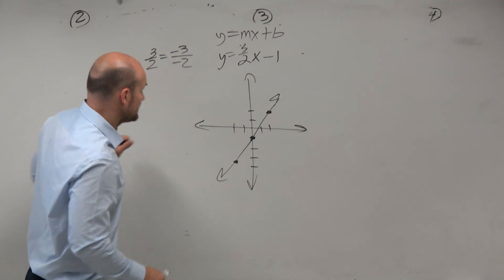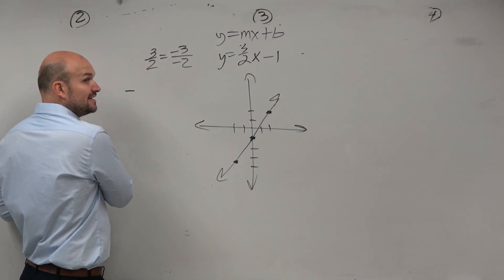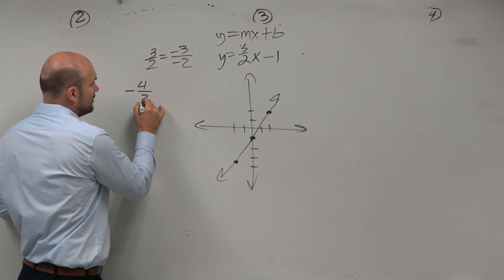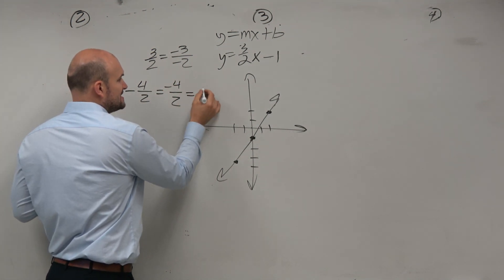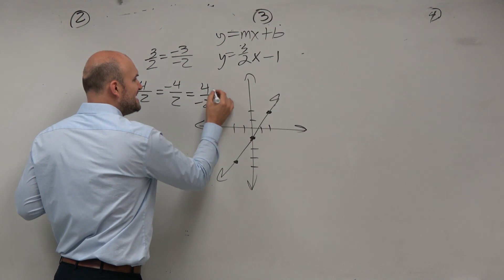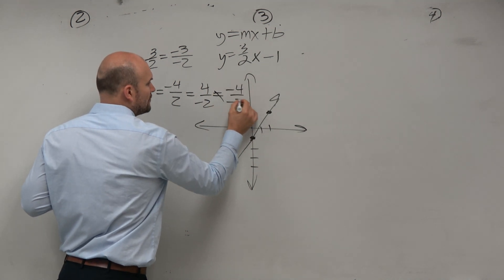And since we're on this topic, it's important then, what if you have a negative slope? It's important for you guys to know that negative 4 halves is the same thing as negative 4 over 2, which is the same thing as 4 over negative 2, but it's never equal to negative 4 over negative 2.